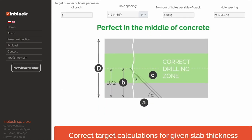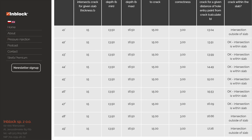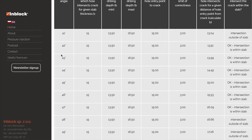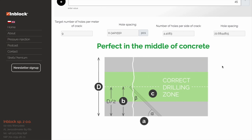In practice, it's hard to drill a hole that intersects the crack precisely in the middle of the slab. Normally, given that there's some variance when holes are drilled by hand, the hole will end up a little higher or a little lower. But what's key is that the hole intersects the crack within a permissible area, and that's what this calculator can help you identify. Thanks for your attention, and good luck on the job site!